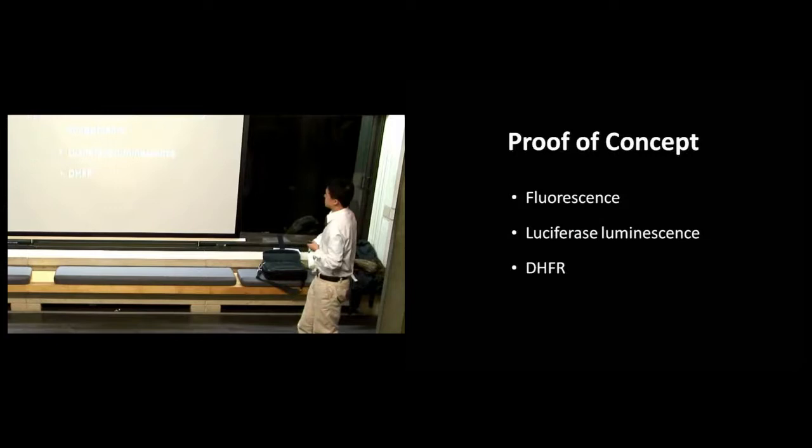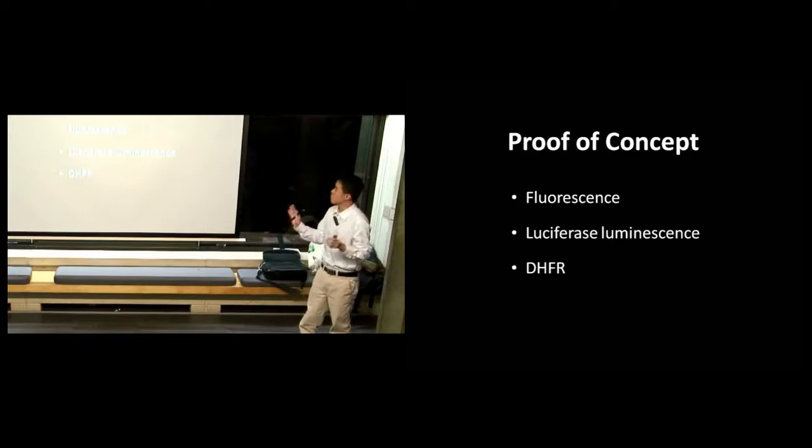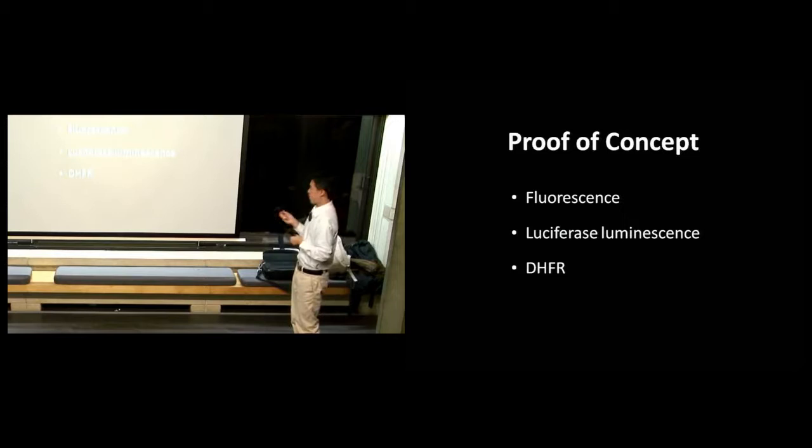What we're presenting is a series of proof-of-concept experiments. We're not saying this system is the answer to everything, just that it behaves the way we want it to work in Toxoplasma gondii. We designed three morpholino oligomers specifically against fluorescence in fluorescent parasites, luminescence in luminescent parasites, and against DHFR, which is a known essential target. So inhibiting fluorescence, inhibiting luminescence, and inhibiting a known essential gene.